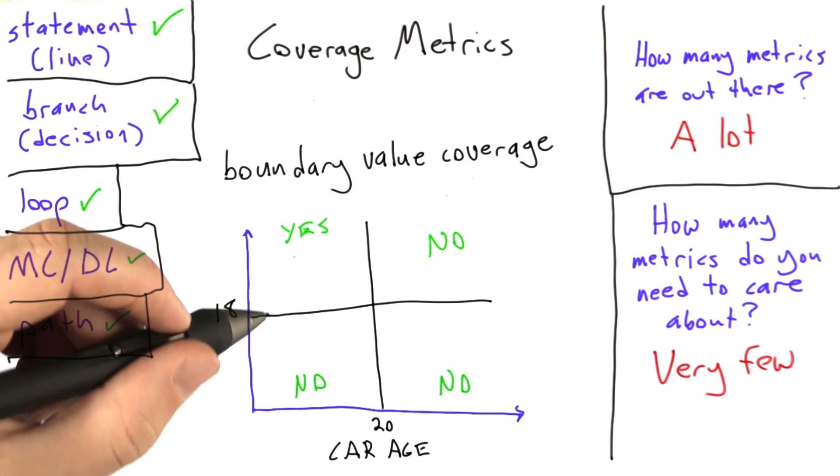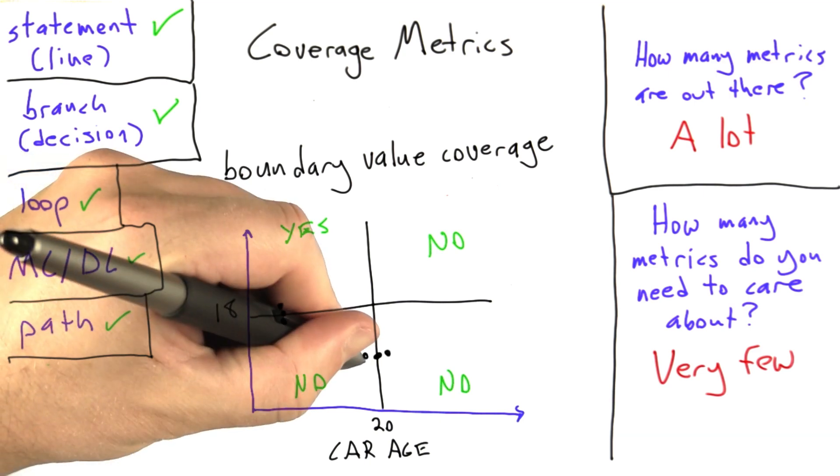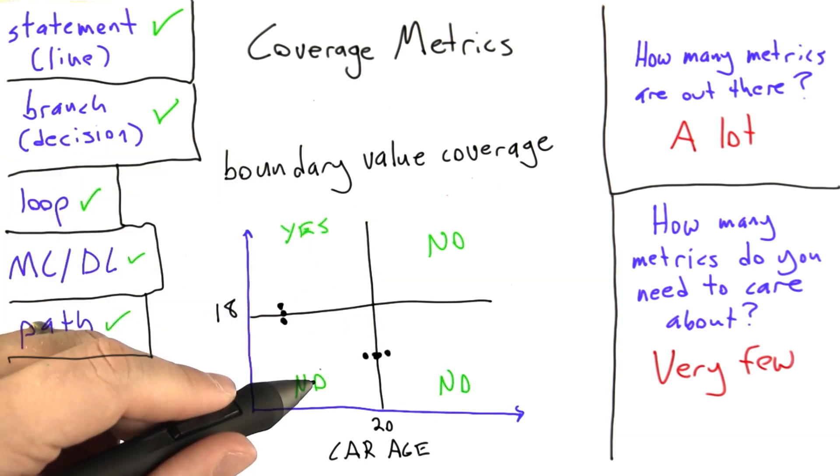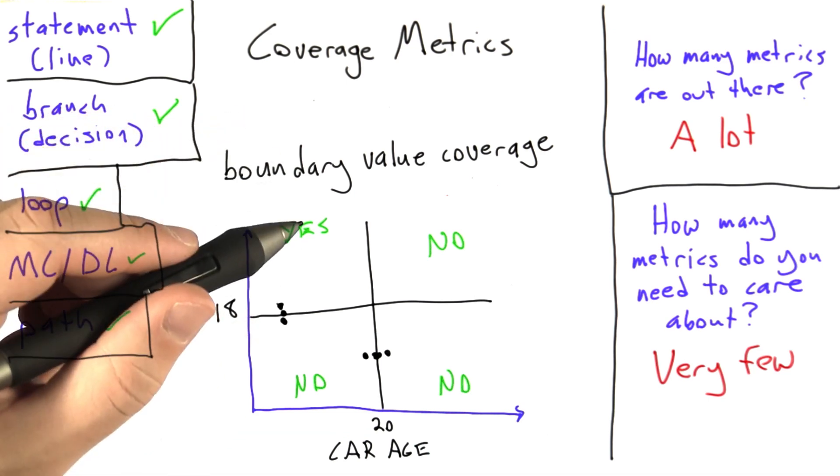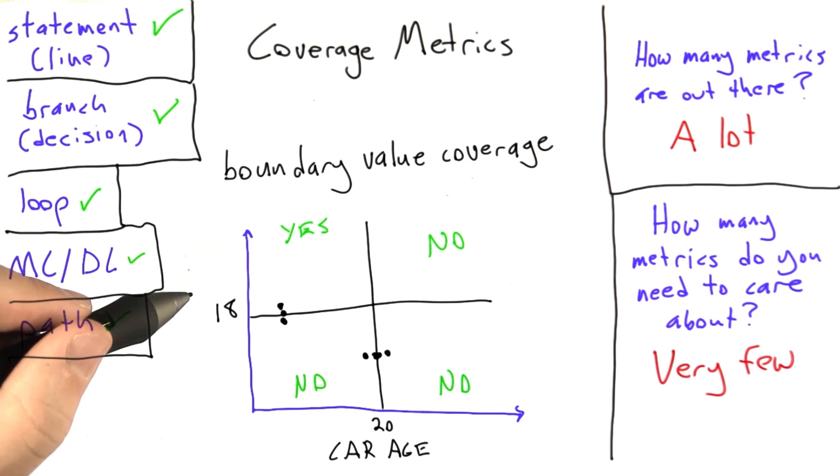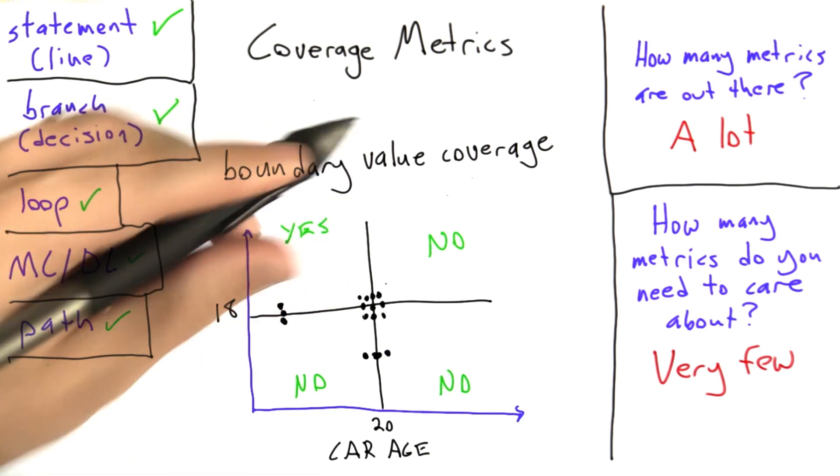If the software treats these values independently, we're probably okay testing values around 18, independently of the age of the car, and testing car ages around 20 years old, independently of the age of the driver. On the other hand, if we had specific knowledge that our implementation considered these variables together, then we probably would also need to test with combinations of inputs that are near the boundaries.